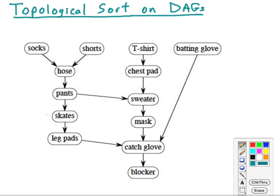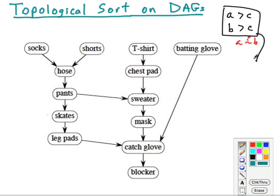These graphs are good models for processes and structures that have partial orders. For example, we may know that A is greater than C and that B is greater than C, but we may not have any idea how A relates to B. Even without this extra information, we can impose an ordering on A and B and come up with a full ordering — for example, A then B then C, or B then A then C, as long as they both come before C.